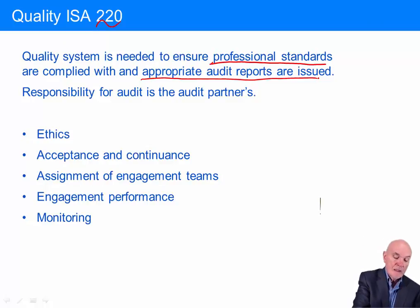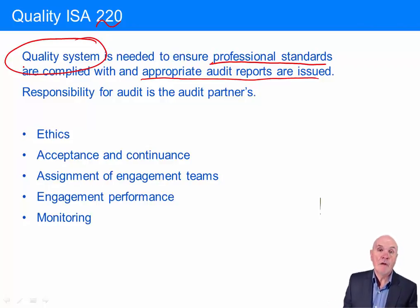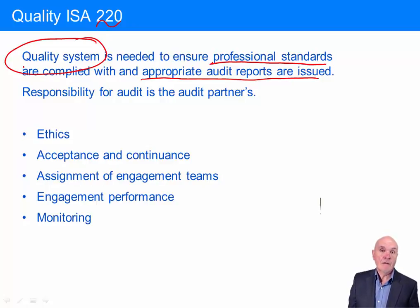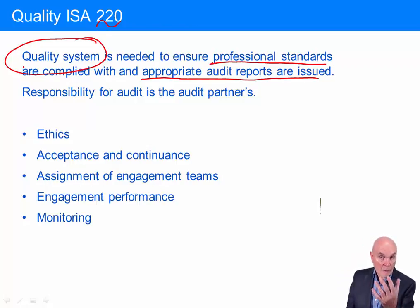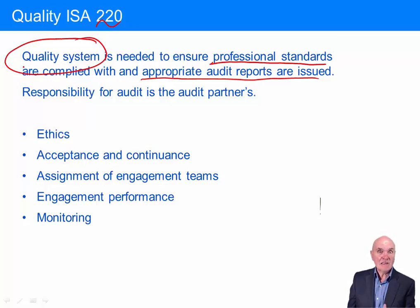The key here is a quality system. We know from our work on ethics that it's important for no member of the audit company to own shares in a client, because this can give rise to a self-interest threat — you want the shares to do well, you're auditing the client, and therefore you could be induced to go easy on them. But how does an audit company know that none of its staff members own shares in a client? It's not just left up to good luck or an ad hoc check — it has to be a system which everyone complies with.